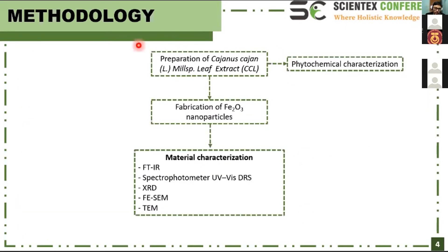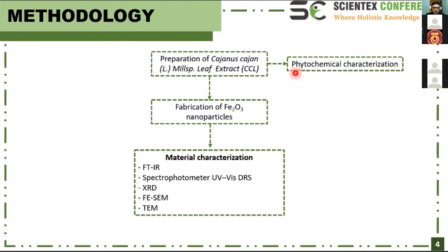The methodology is divided into three sections: preparation of CCL, fabrication of iron oxide nanoparticles, and material characterization using several techniques such as FTIR, UV-Vis spectrophotometer, XRD, FESEM, and TEM. We also conduct phytochemical characterization to see the secondary metabolites in the extracts.